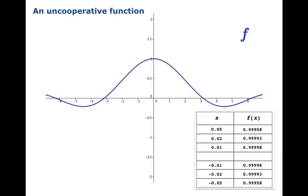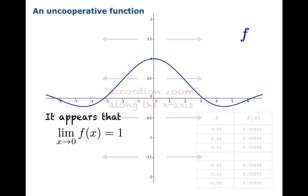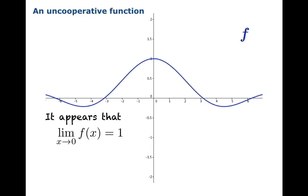So let's explore this idea with an example of what we might call an uncooperative function. Here's a real function that's been plotted on GeoGebra. And at this scale, when you look at the graph and the numerical data, it sure looks like the limit as x approaches 0 of f of x is 1. It really looks like it. But what we're going to do is apply an accordion zoom along the x-axis. And we're going to see what happens. At first, everything looks perfectly consistent with the conjecture that the limiting value as x approaches 0 is 1.